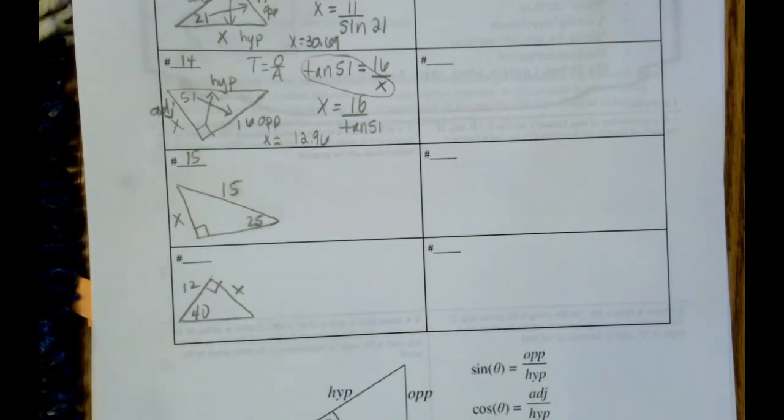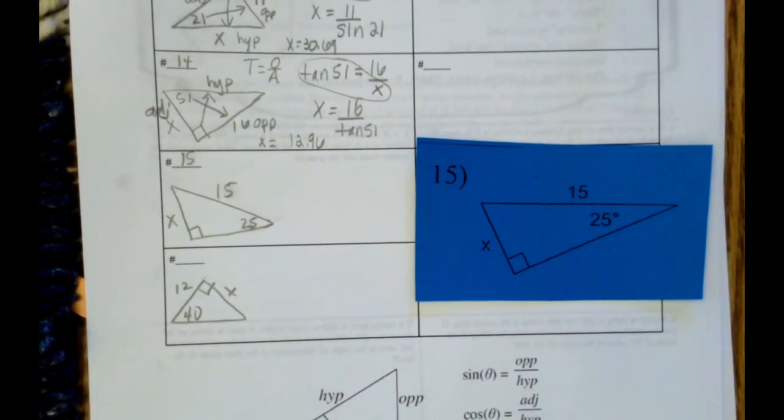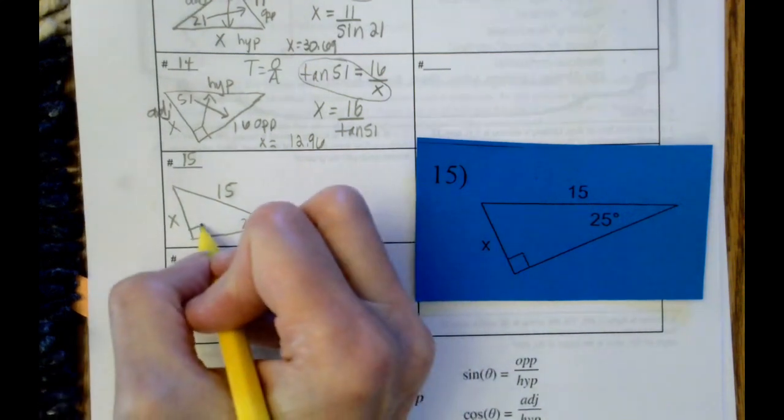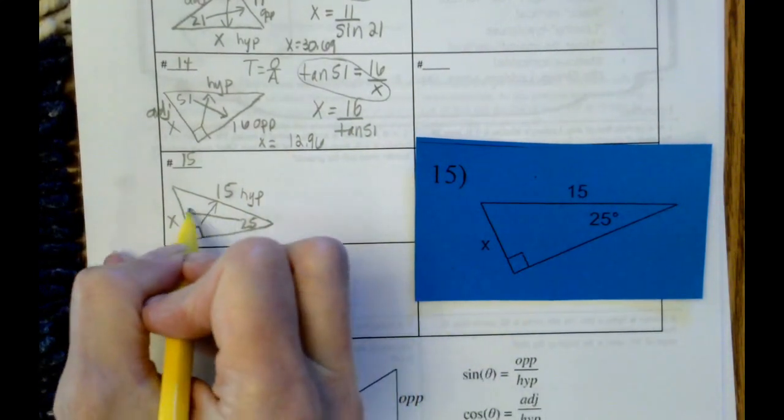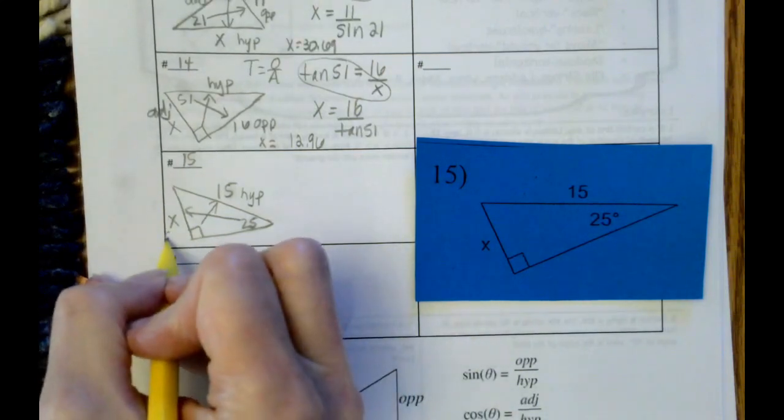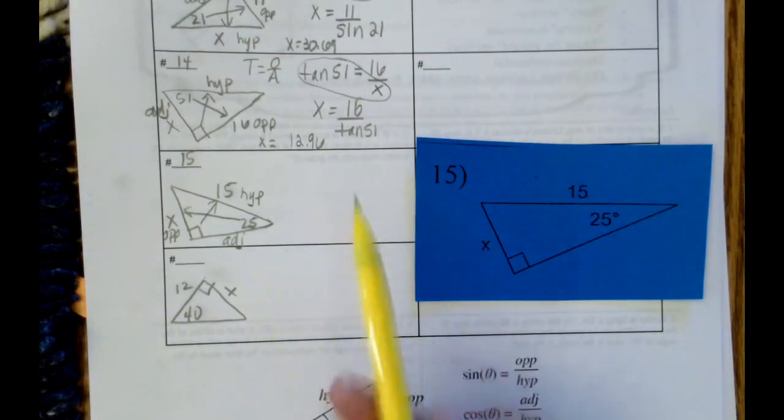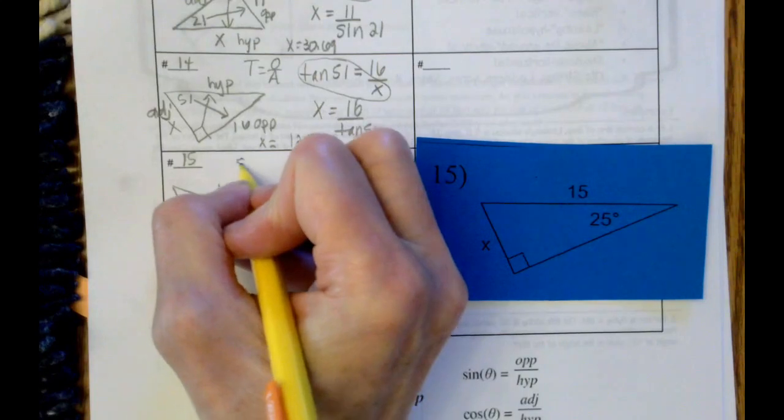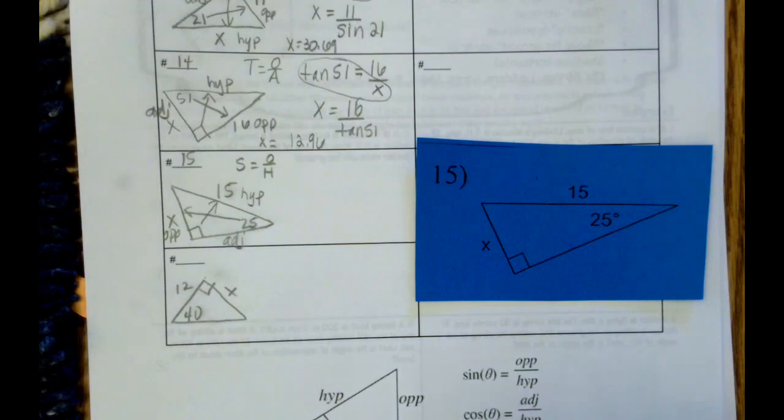Looking at problem 15. Again, here's the blue card. Just checking, my picture is not very good there, but I do have everything in the right spots. Starting with the fact that the 15 is the hypotenuse. Across from the 25 is the x, and that's going to be the opposite, which means the side here is the adjacent. So we've got something on the opposite, we've got something on the hypotenuse, which is the sine function. Sine is opposite over hypotenuse. And we set this up.